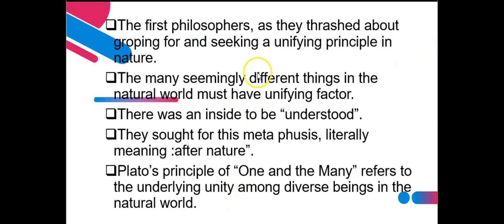The first philosophers were grouping, seeking, and finding unifying principles in nature. The many seemingly different things in the natural world must have a unifying factor. They sought what is called 'meta physis,' literally meaning 'after nature,' according to a chart from 1965. For Plato, 'principles of one and many' refers to the underlying unity among diverse beings. Biologists devised a way to illustrate these principles using a system differentiating between genus and species — many species belong in one genus.